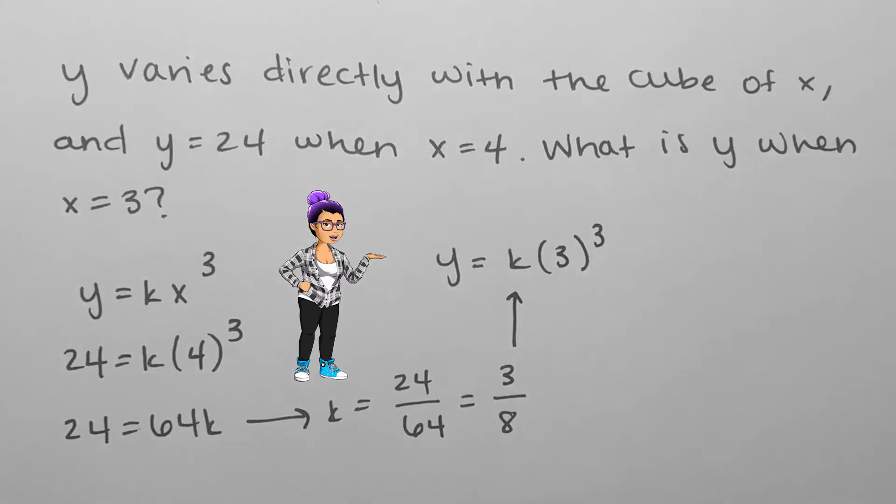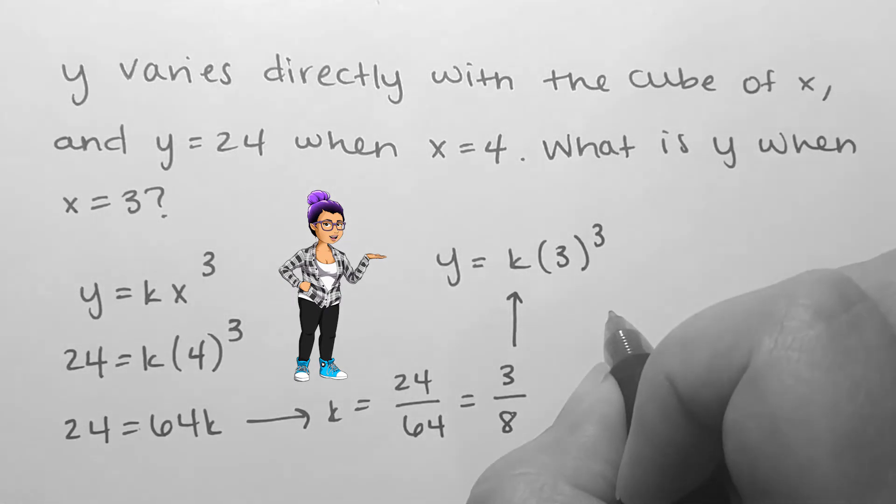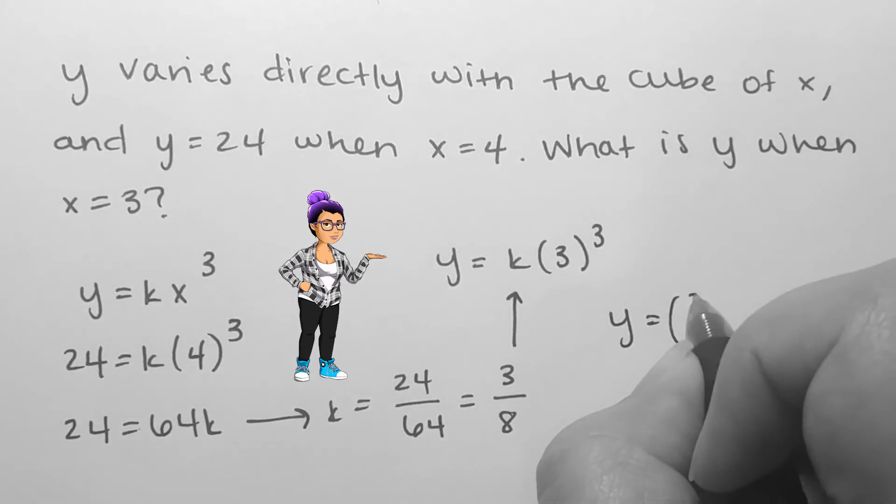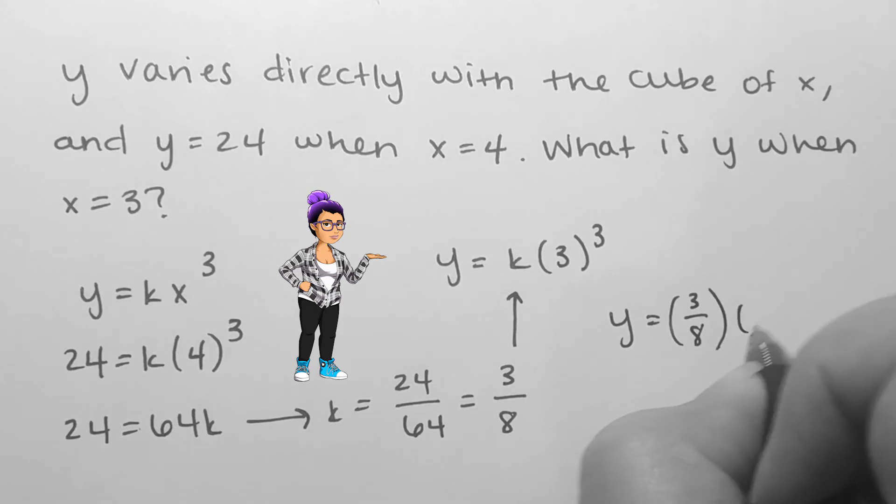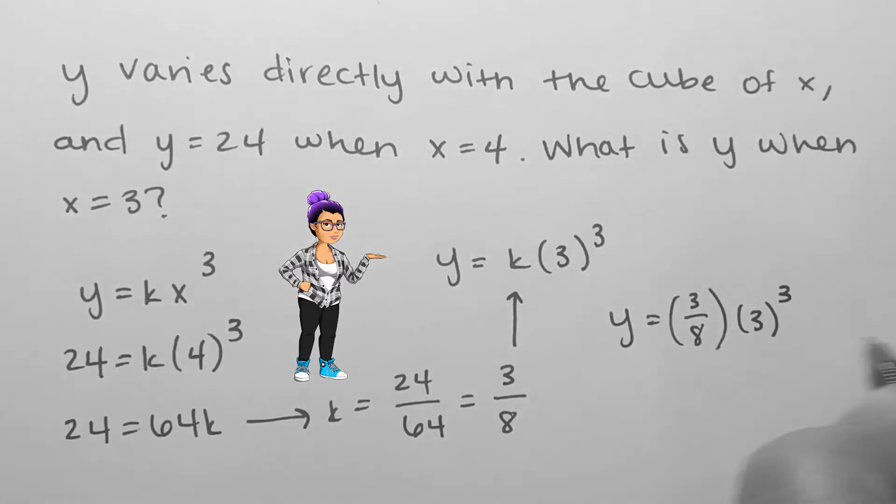Now, the purpose of the problem was to find y when x is 3. So y equals 3 over 8 times 3 cubed. If I simplify this, I get my final answer of 81 over 8.